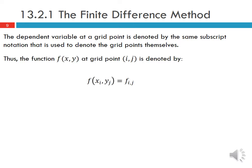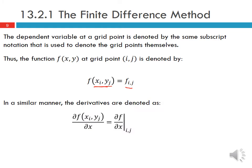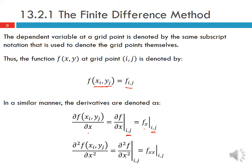The function f(x,y) at grid point (i,j) is denoted as f(x_i, y_j) = f_{i,j}. In a similar manner, the derivatives are denoted as: partial f(x_i, y_j)/partial x = partial f/partial x at (i,j) = f_{x,i,j}, and the second derivative is denoted as f_{xx,i,j}.